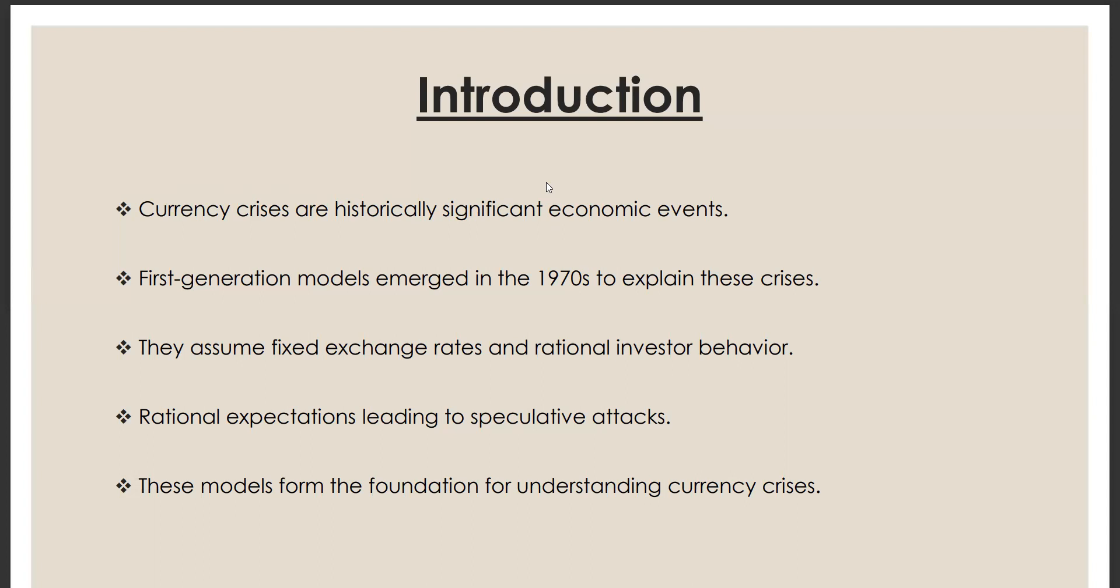Rational expectations leading to speculative attacks. It means rational expectations basically means that people try to predict what's going to happen with their money in the future. Sometimes, these predictions make them nervous, so they quickly trade or sell their money. Again, these models form the foundation of understanding the currency crisis. These clever ideas from the 1970s are like the base of a big building. If we want to understand why currency crisis happened, we must start with these ideas.